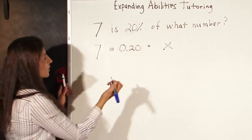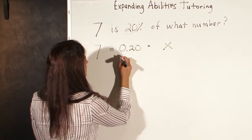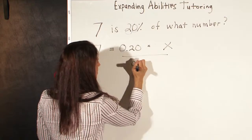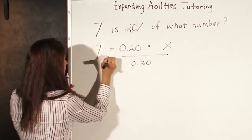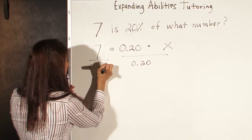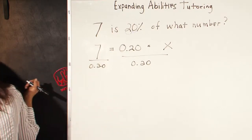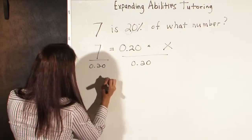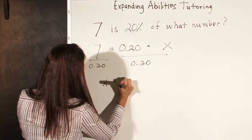So again, here, we're going to divide both sides by 0.20. And 7 divided by 0.20 is 35. So we have x equals 35.